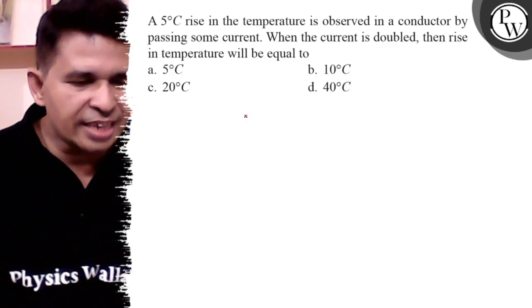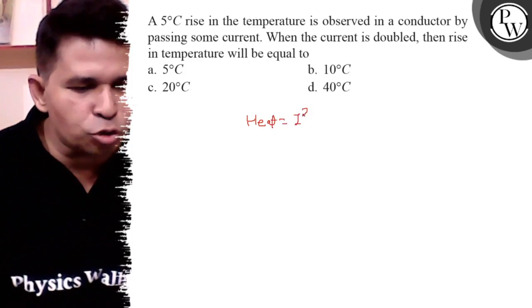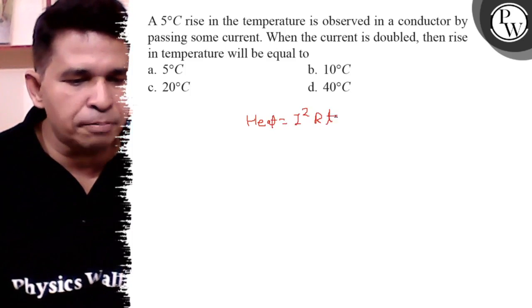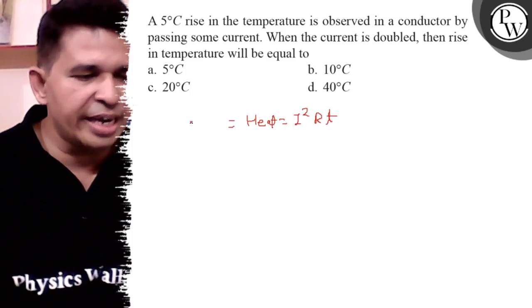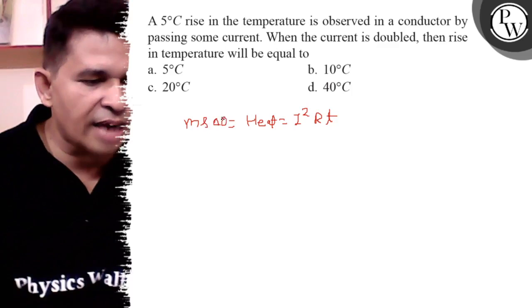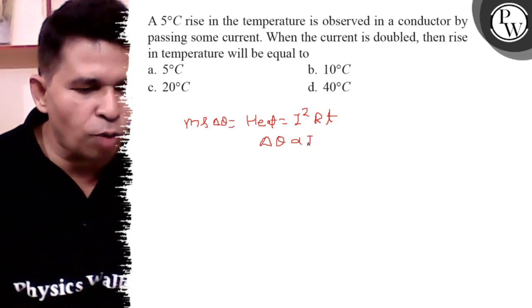We know that the heat is what? It is the I square RT. T is the time and what is the heat? Ms delta theta. Delta theta is the rise in temperature, so delta theta is proportional to I square.